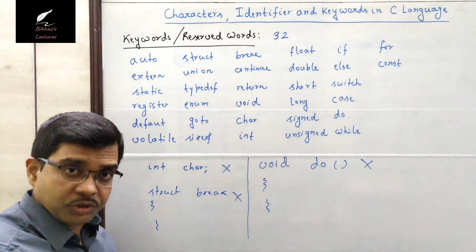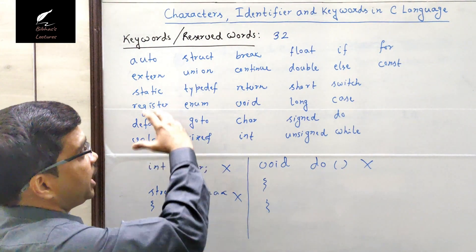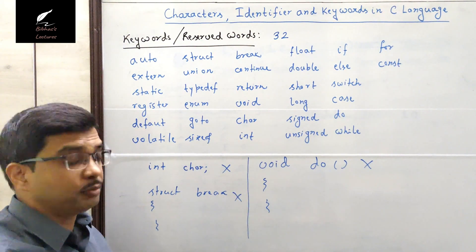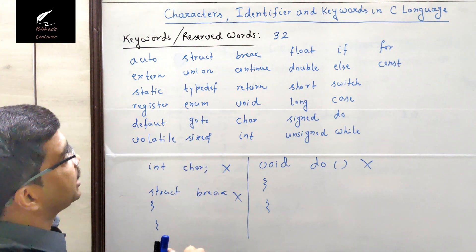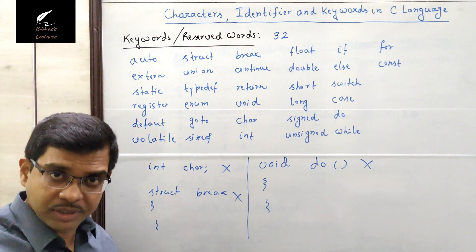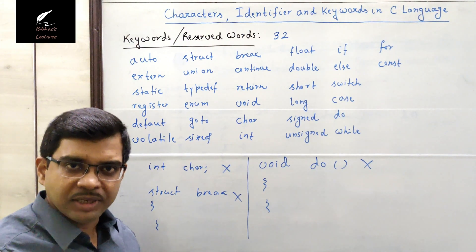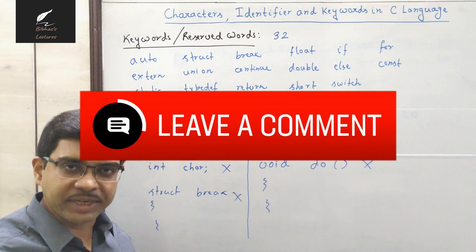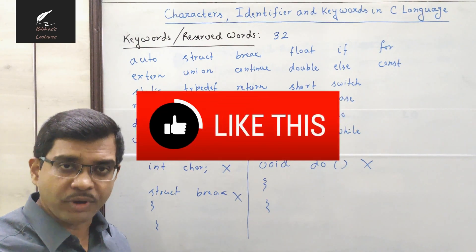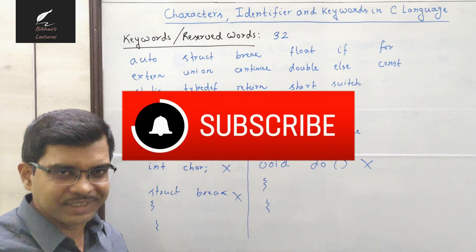So these are the 32 different keywords we will mainly use. In upcoming videos, I will discuss each and every keyword with the help of some programs, so that it will be clear to all of you. Today I have discussed about characters, identifiers, and keywords or reserved words available in C language. I hope you have understood the concept. If you have any query or suggestion, please feel free to post your queries in the comment box. Thanks for watching, please take care, have a nice day, thank you.